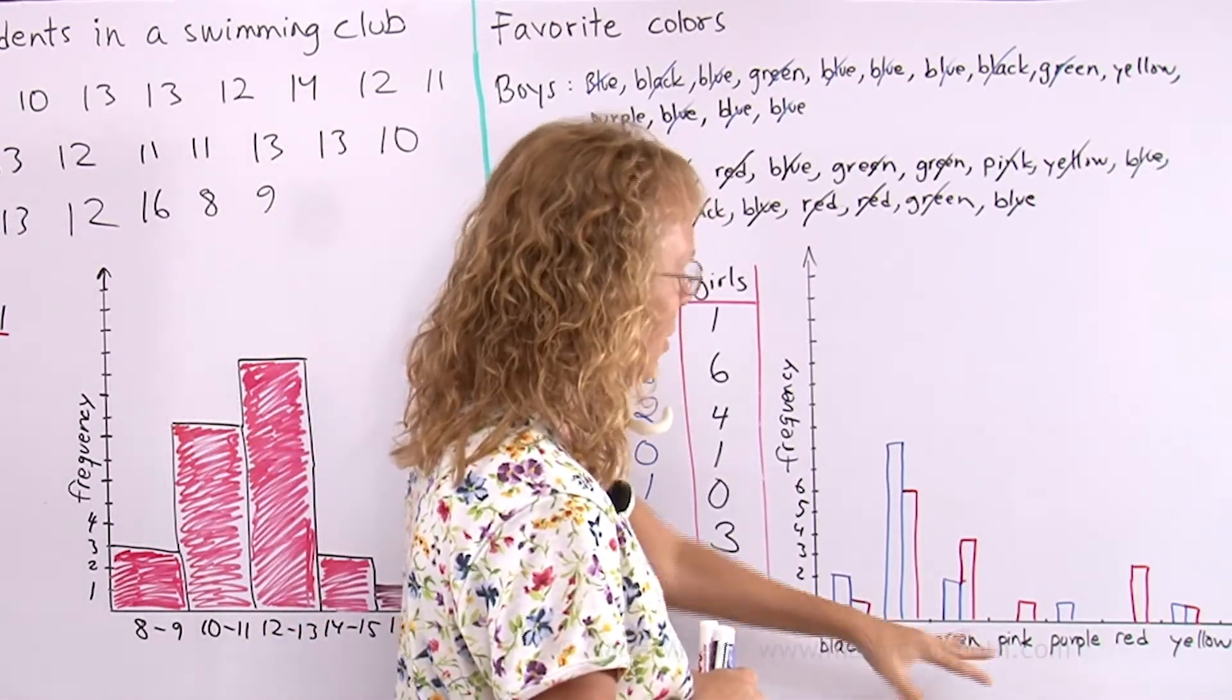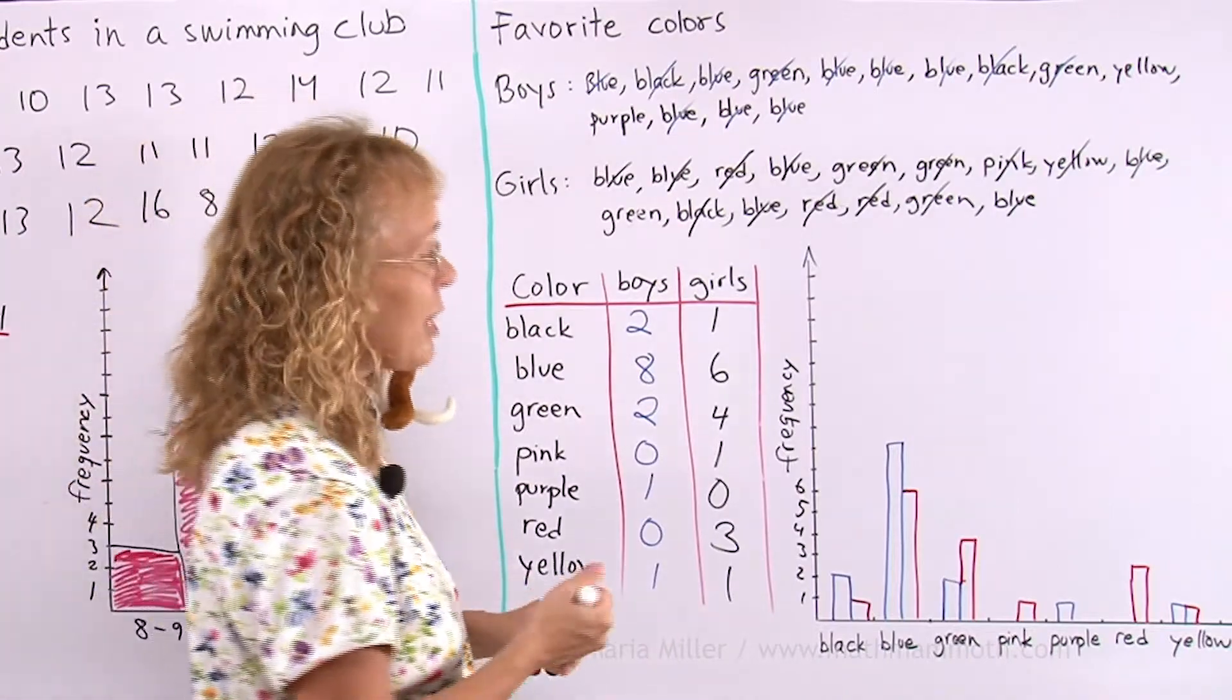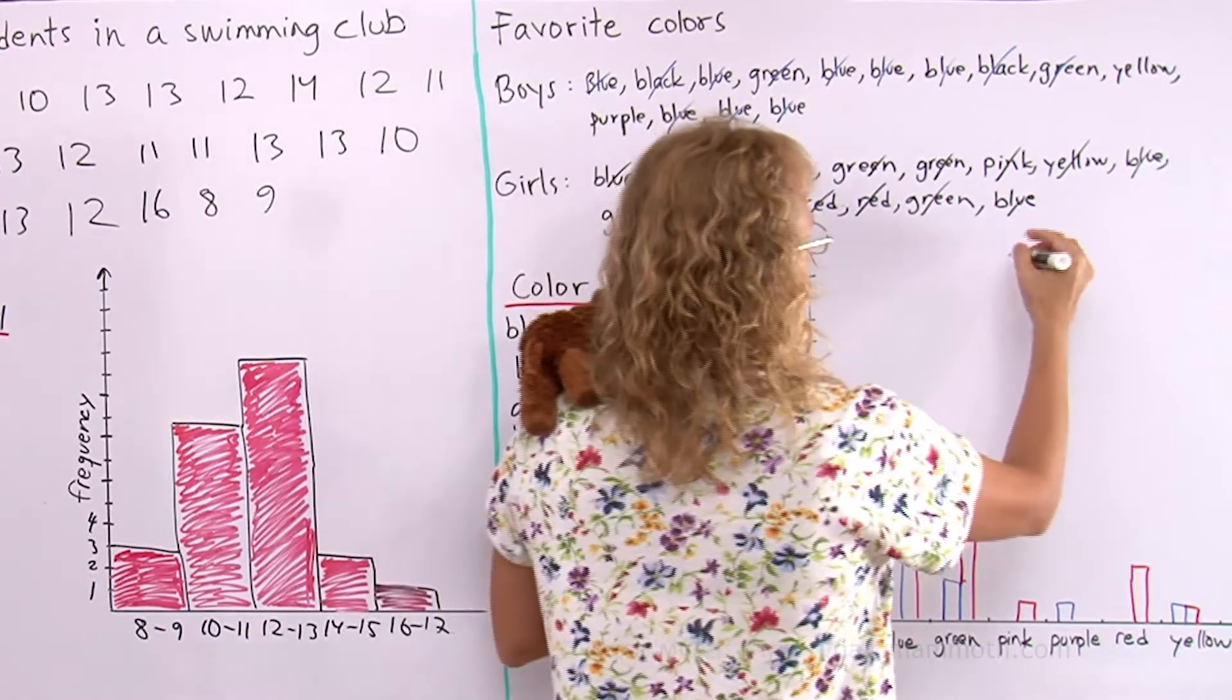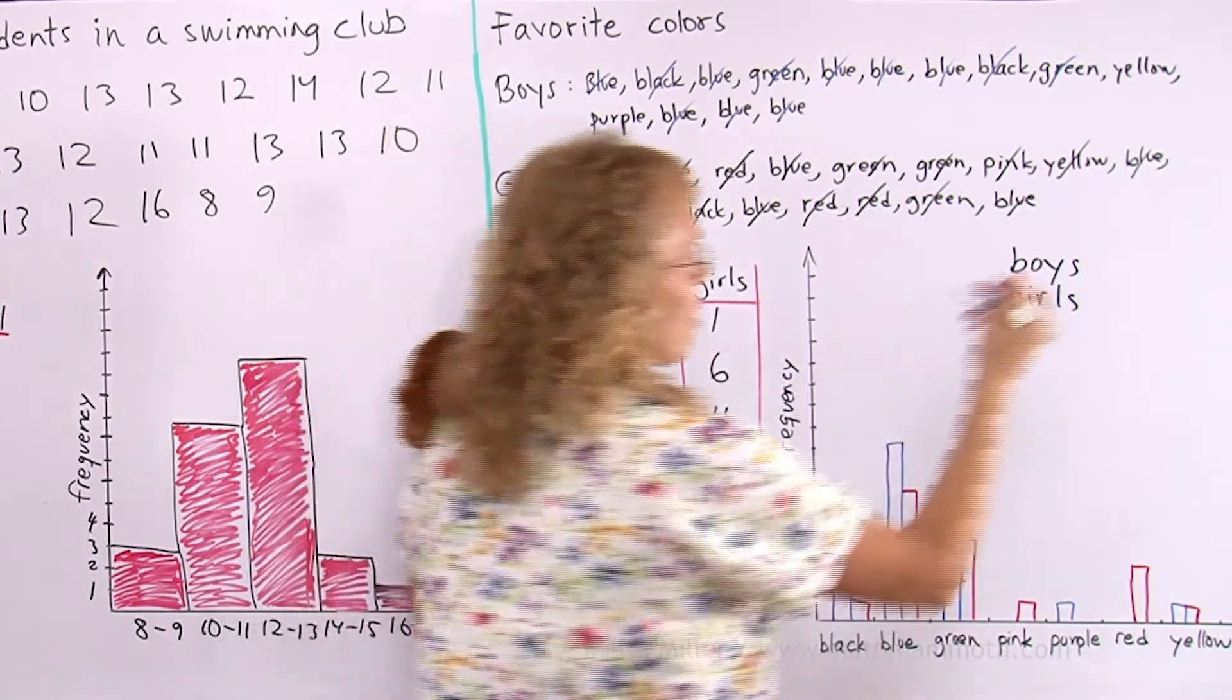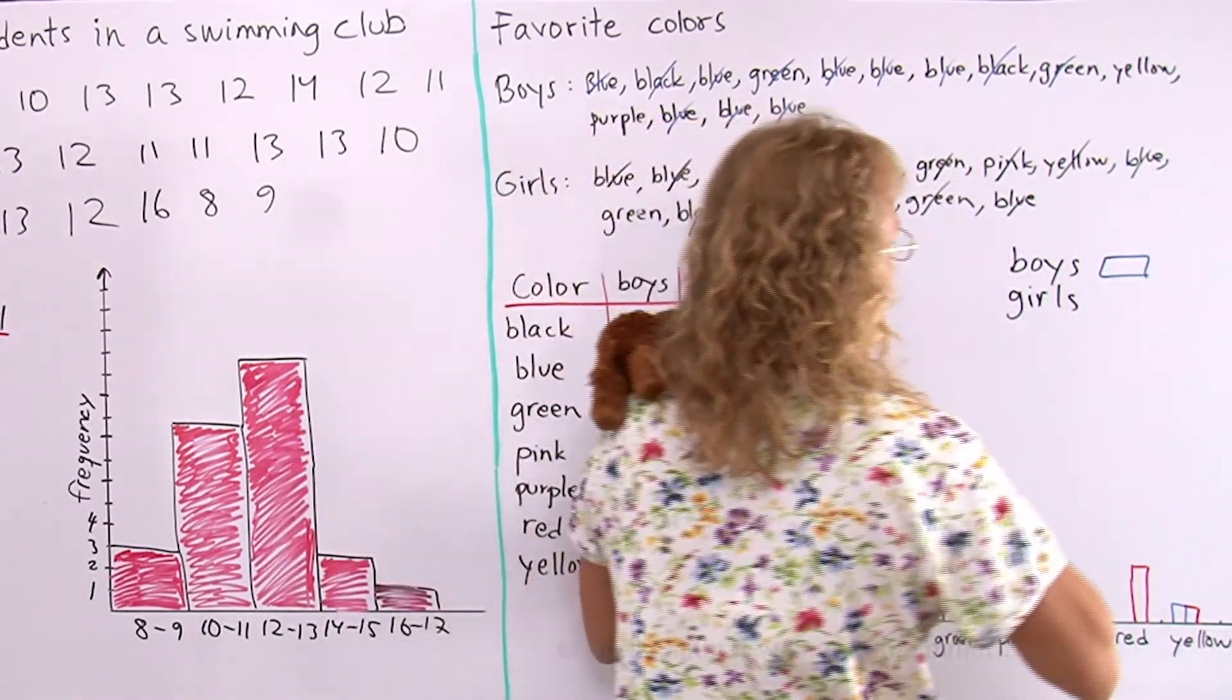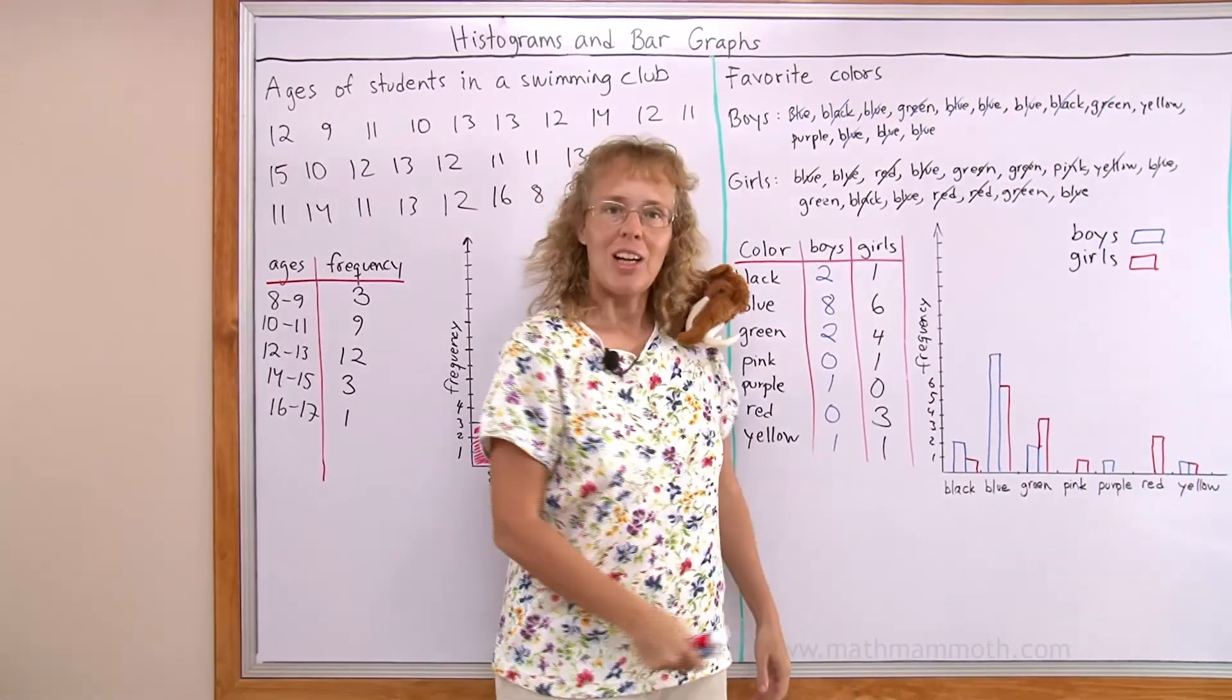And there's some differences between boys and girls and the double bar graph shows us that clearly. And we still need to add one more thing in here, which is the legend. Boys and girls. Boys are all the blue graphs, blue bars. Girls are all the red bars, like that. Okay, I hope this was helpful.